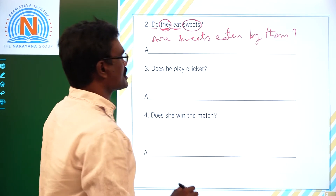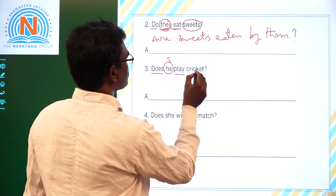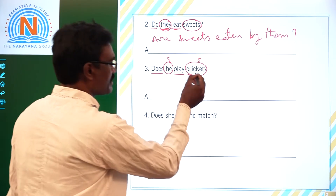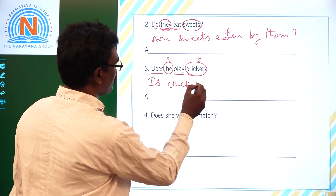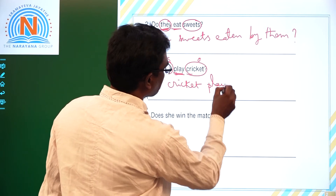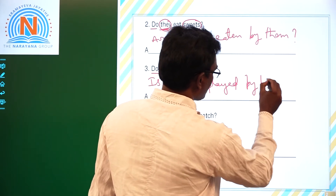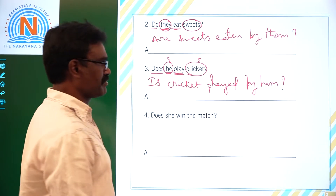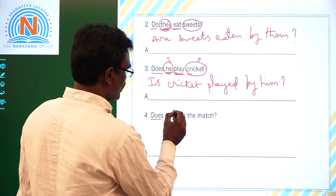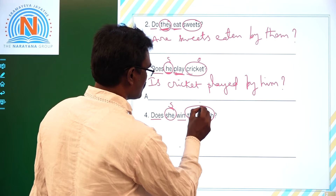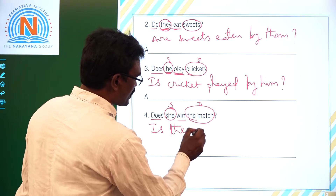Third one: 'Does he play cricket?' 'Does' is the helping verb, 'play' is the main verb, 'he' is the subject, and 'cricket' is the object. Fourth one: 'Does he win the match?' 'Does' is the helping verb, 'win' is the main verb, 'he' is the subject, and 'the match' is the object — singular. So our answer should begin with 'Is.' The answer is: 'Is the match...'